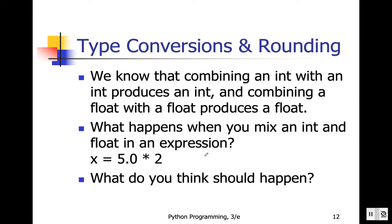Hello everyone. In this segment we will cover type conversions and rounding. We know that in Python we can write an expression using a combination of different numeric data types. For example, we can combine an integer with an integer, which produces an integer data type, or we can combine a float with a float, which produces a float.